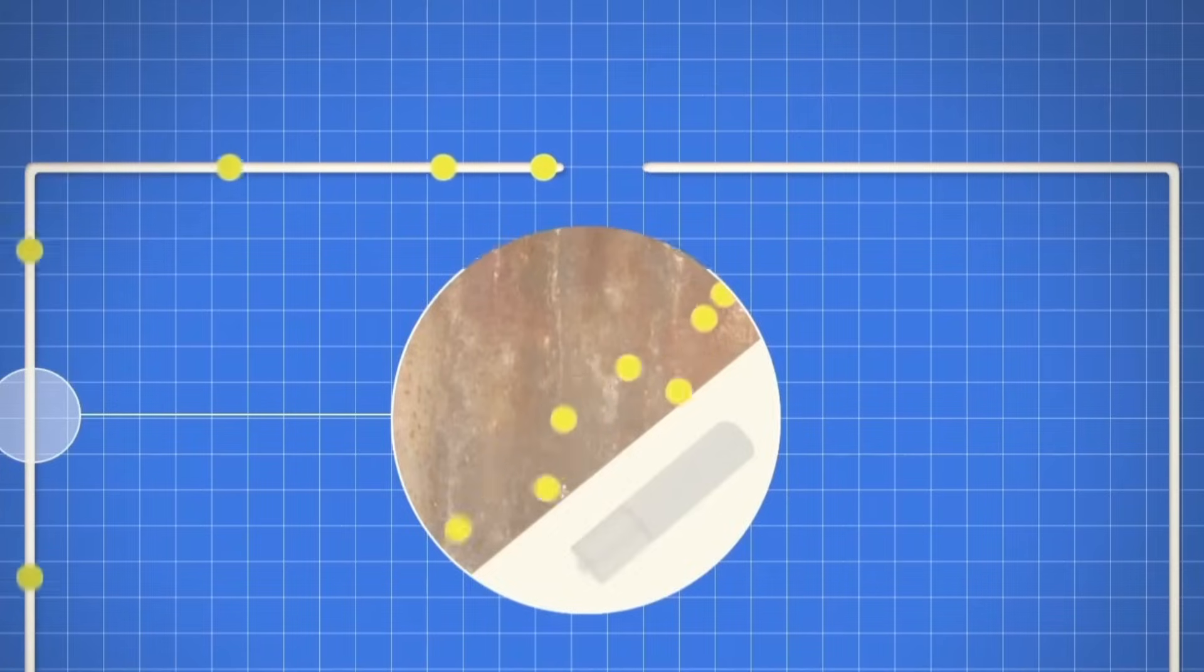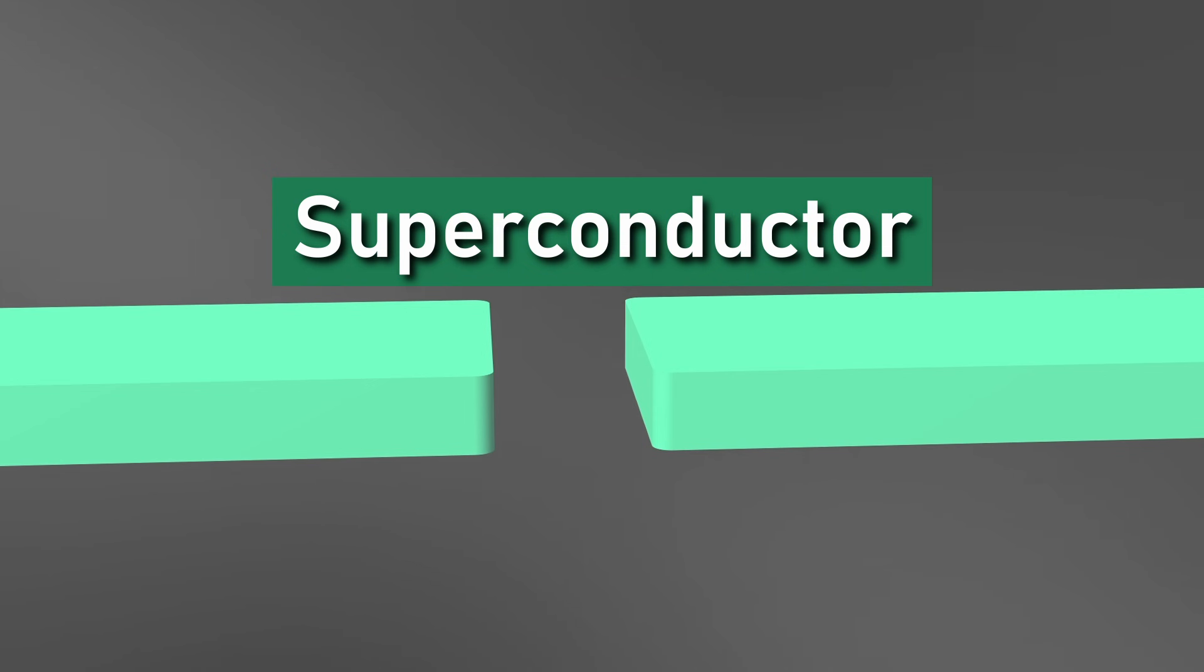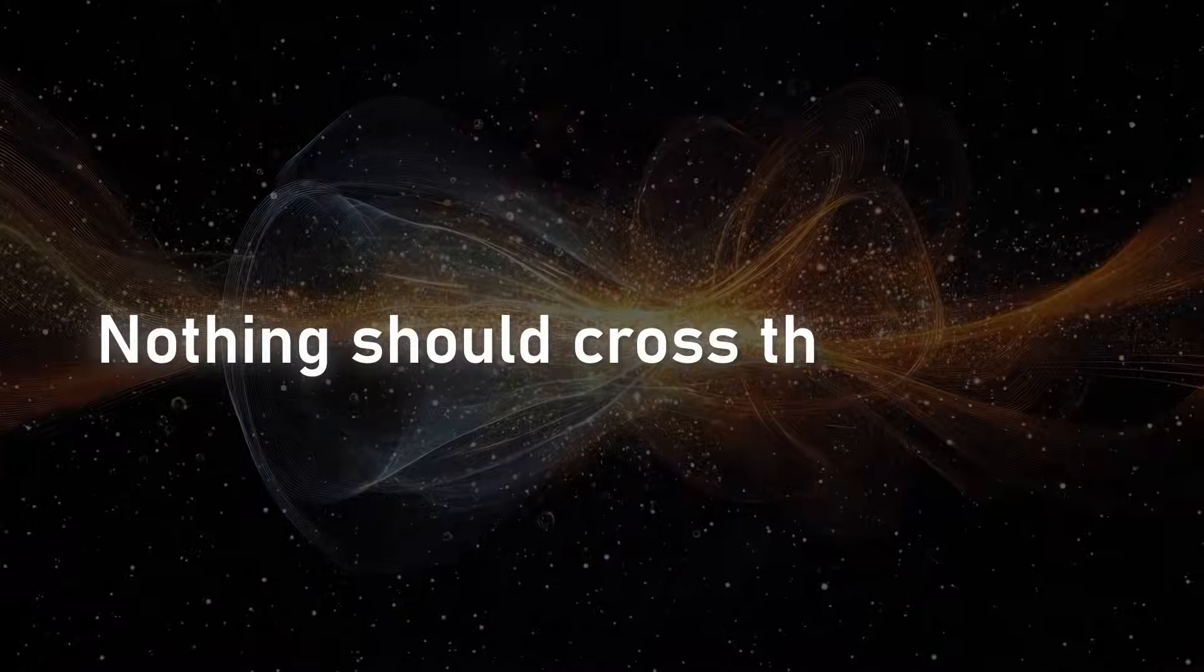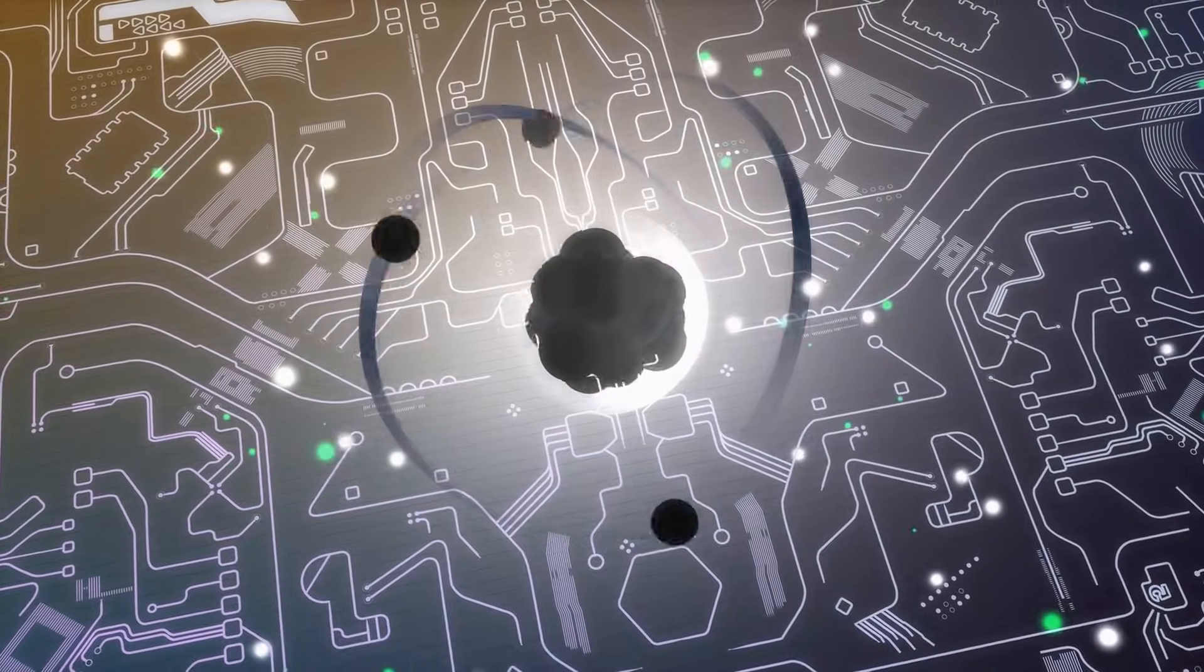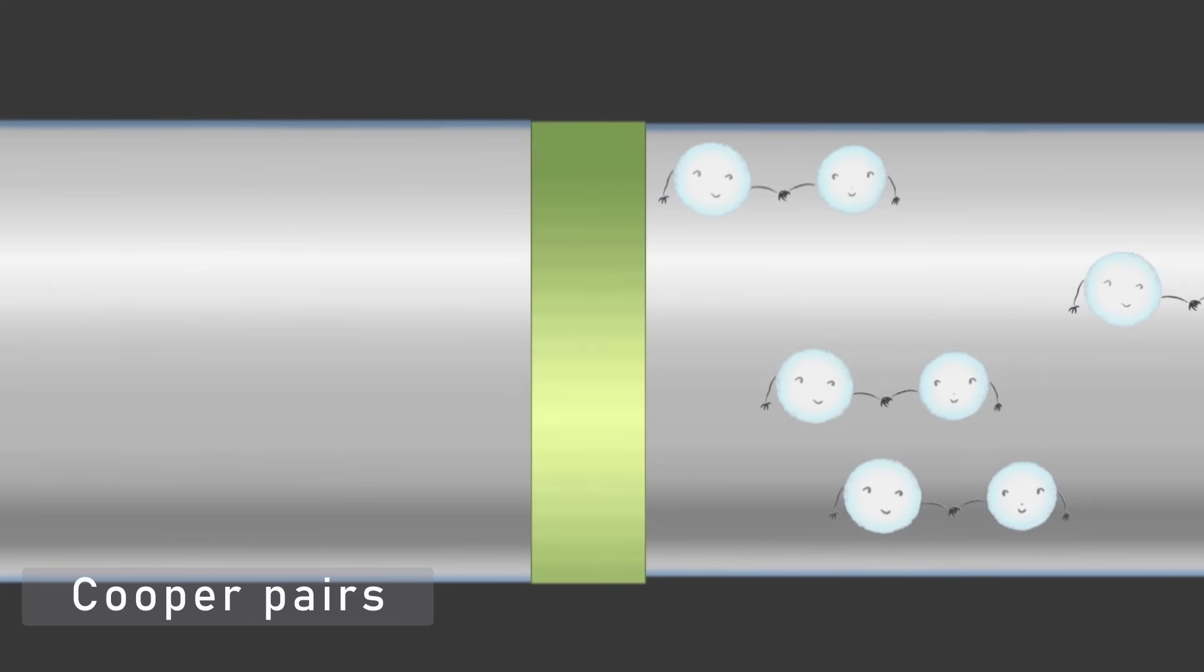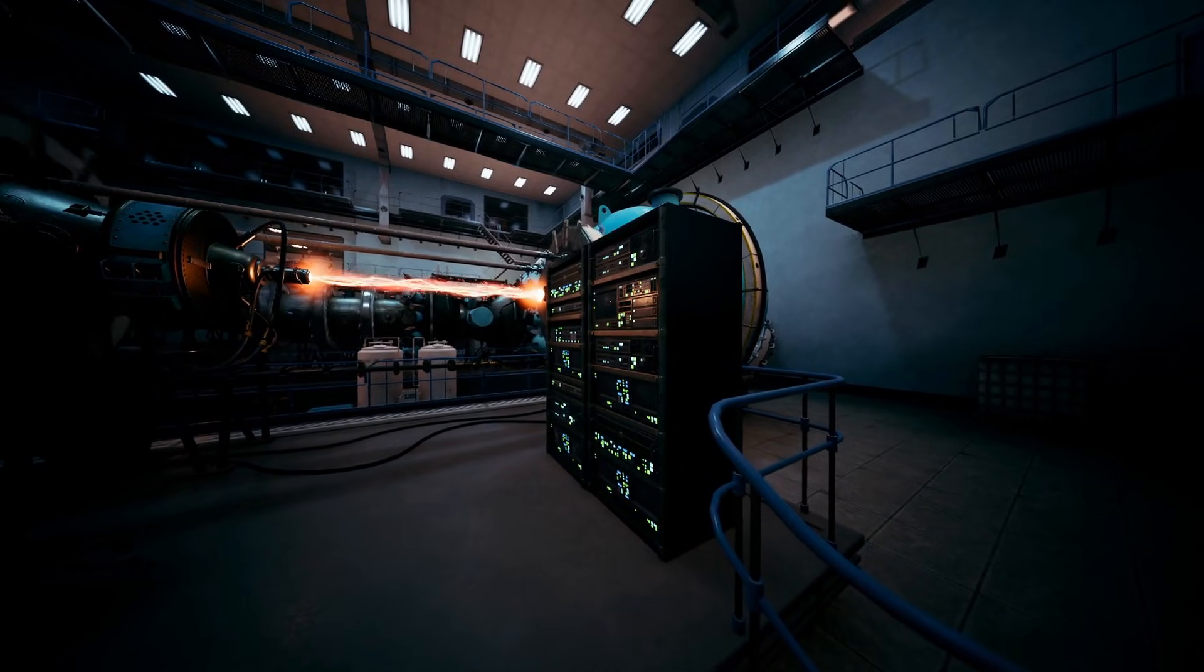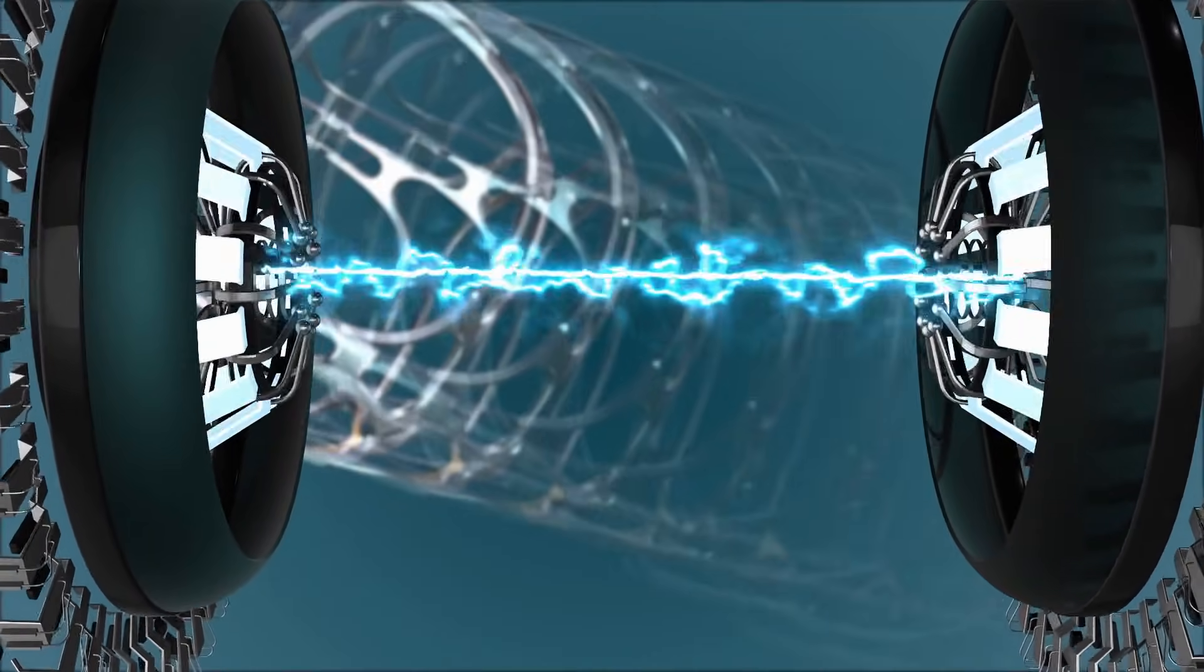At the center of this revolution was a deceptively small invention, the Josephson Junction, two superconductors separated by a whisper-thin barrier. Classically, nothing should cross that barrier. But quantum mechanics has no problem ignoring the rules. Electrons in a superconductor move in pairs, Cooper pairs, and together they form a single quantum wave that stretches across the entire material. A wave big enough to tunnel straight through the barrier, unbroken.